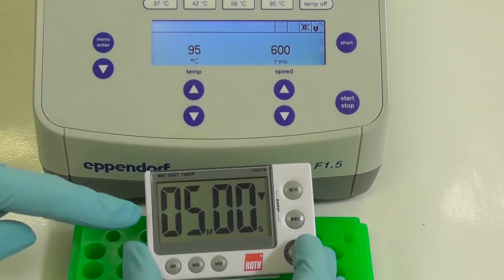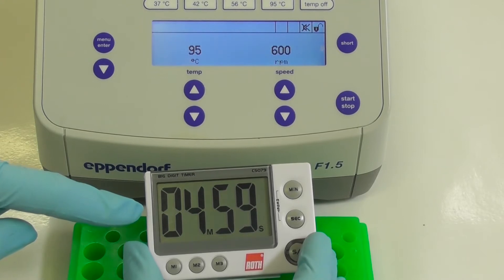Prior to gel loading they are placed in a heating block set to 95 degrees for 5 minutes.